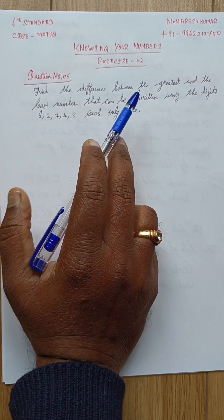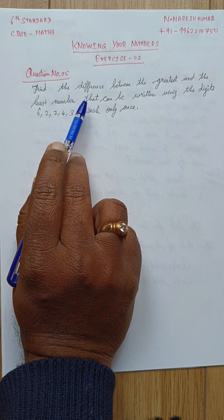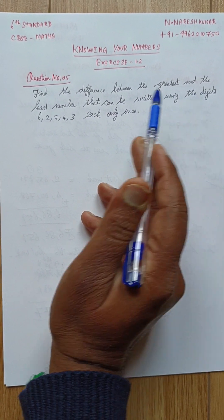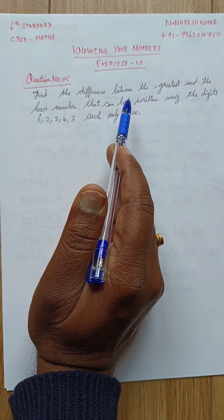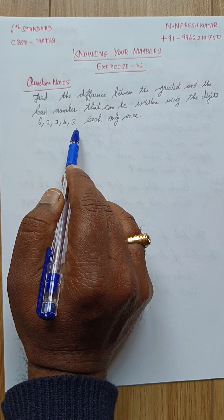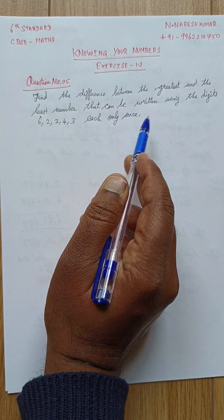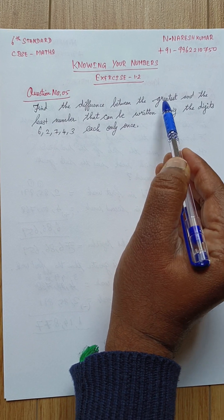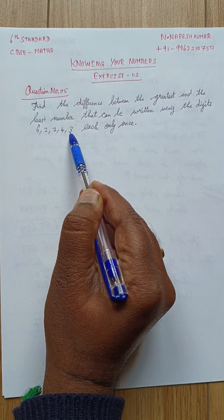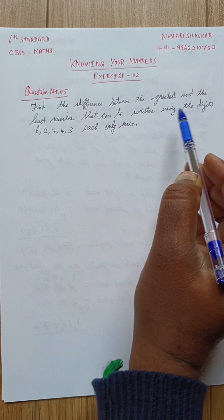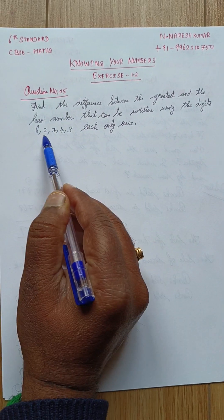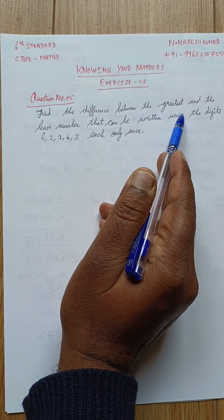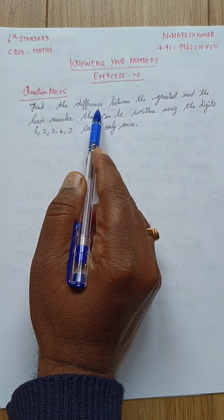Knowing Your Numbers, Chapter Exercise 1.2, Question 5: find the difference between the greatest and the least number that can be written using the digits 6, 2, 7, 4, 3, each only once. First, form the greatest number and the least number from these digits, then find the difference between those two numbers.